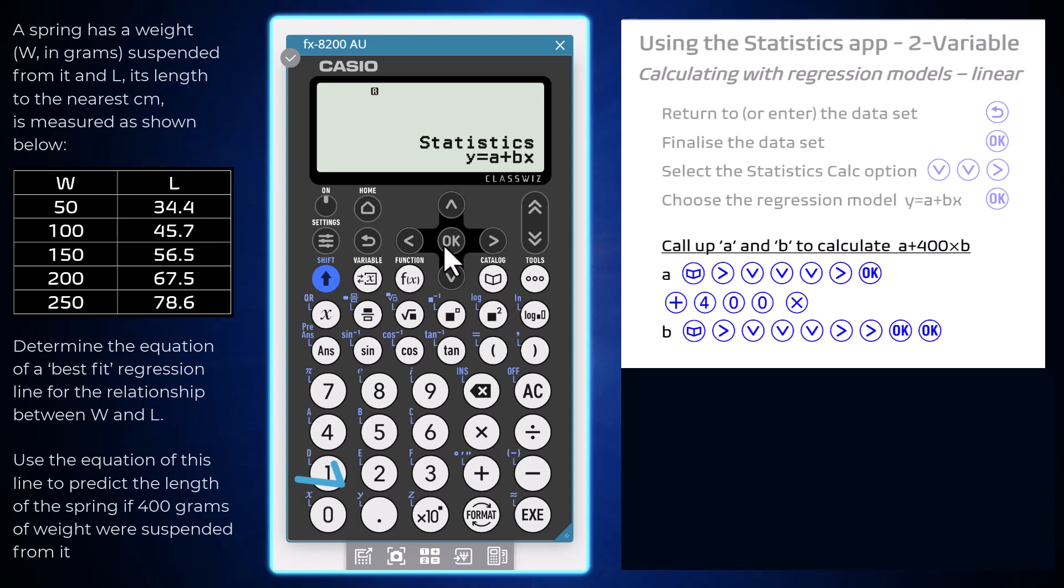One way to make this prediction for y when x is 400 is to calculate a plus b times 400. The values a and b can be found by pressing Catalog, arrowing right to open the statistics options, and then moving down to choose the regression options by pressing OK or the right arrow. Using the arrows and pressing OK, values of a and b can be called up to complete the calculation required.